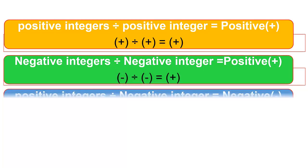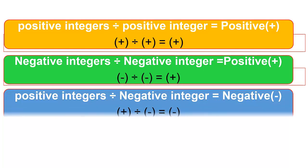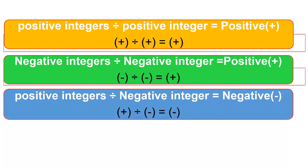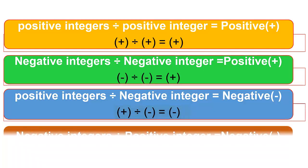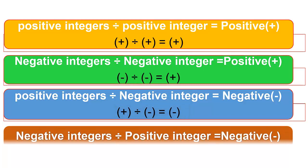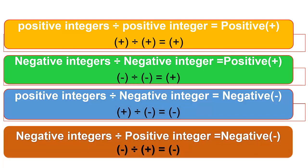Positive integer divided by negative integer is equal to negative integer — that is plus divided by minus equals minus. Negative integer divided by positive integer is equal to negative integer — that is minus divided by plus equals minus.